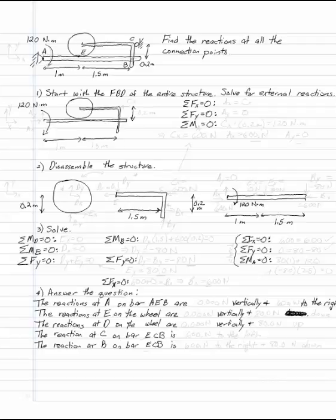Find the reactions at all the connection points. I've got three pieces here. I've got the wheel at E, I've got the bar ECB here, and I've got the bar AEB. I have one applied moment at the edge of 120 Nm and three distances.